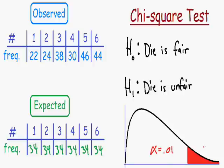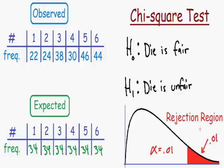The area in this tail, shaded in red, is equal to 0.01. This area is called the rejection region. If the results of our test fall in the rejection region, we can reject the null hypothesis — we can reject that the die is fair and accept the alternative hypothesis that the die is unfair. This is why the rejection region is so important: it allows us to make a conclusion at the end of our test.